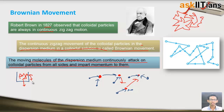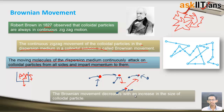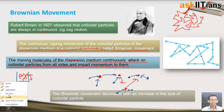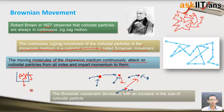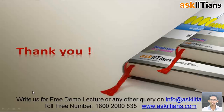Brownian movement decreases with increasing size of the colloidal particle — when the size increases, their speed decreases, because larger size means greater mass and therefore lower velocity. This is why particles of a suspension, which are of very large size, do not show Brownian movement. So we have discussed two properties — Brownian movement and the Tyndall effect — both are very important. I hope things were clear to you; you should review these topics a number of times as they are important. Thank you.